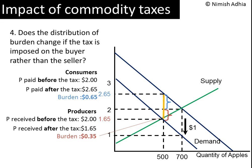This surprising result has powerful implications for public policy. Policymakers often talk about how we need to tax businesses more and individuals less. The economic analysis here shows that it doesn't matter. Individuals are going to end up with the same burden of tax whether they write the check to the government or the businesses they are buying from are the ones writing the check to the government. The tax wedge kept from our analysis of tax on sellers is useful here as well, providing all the information about the impact of tax collected from the buyer.